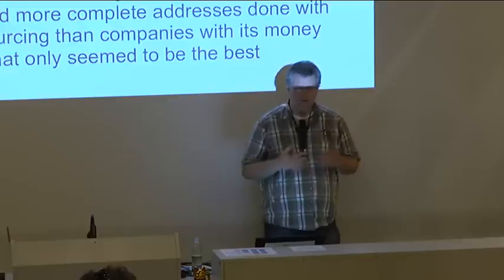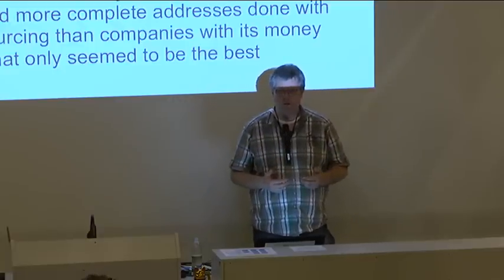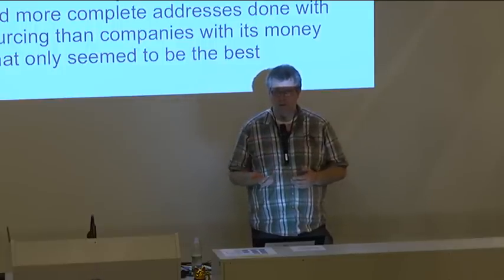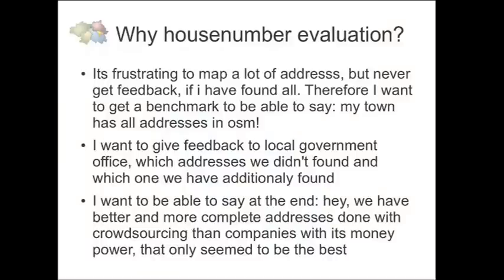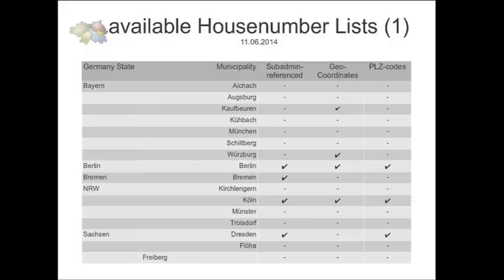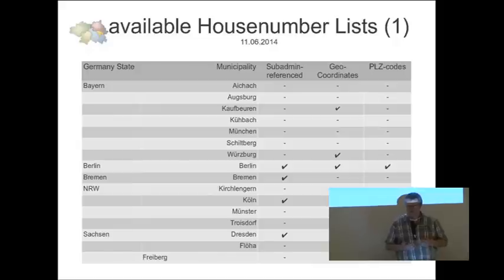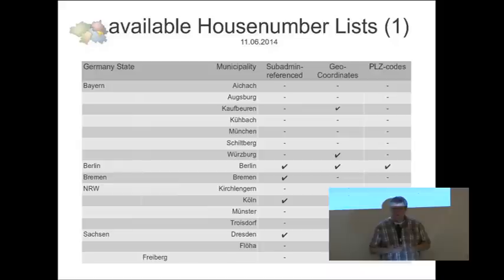The official addresses are not really completely correct because they are planning addresses. The municipality gives an address, but it can be that there is no building in the next two or three years, or there is already a building in the street which has a number but is not official in the data file from the government. So I asked a few companies and local governments in my neighborhood to give me house number lists, and after a while other municipalities also delivered house number lists because of open data or because other OSM mappers requested them.